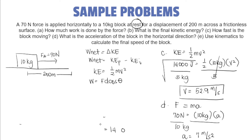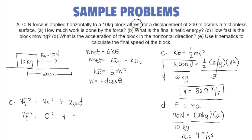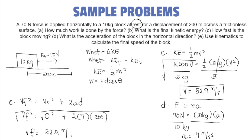Now we're up to our last unknown, where we're going to use kinematics to calculate the final speed of the block. We're finding the final speed of the block. We could use this equation: VF squared is equals to V-naught squared plus 2AD. The object is initially at rest, so V-naught is 0. Using the acceleration of 7 and the displacement of 200, taking the square root of both sides, we get the final speed, which equals 52.9 meters per second.